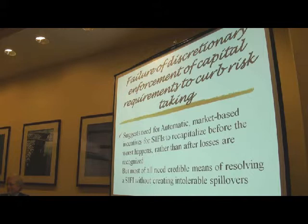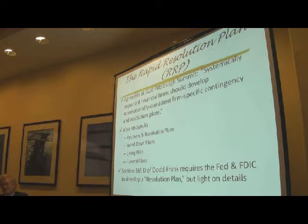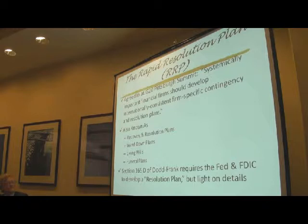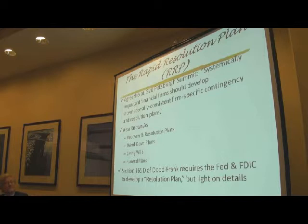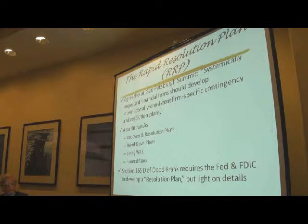The failure of discretionary enforcement of capital requirements suggests a need for automatic market-based incentives. But most of all, we need credible means of resolving SIFIs — what the G20 commented on in Pittsburgh. These are known as living wills; the British prefer the term recovery and resolution plans. Section 165D of Dodd-Frank requires that the Fed and the FDIC develop a rapid resolution plan, but it's very light on details. Rapid resolution should protect taxpayers from the necessity of bailing out SIFIs and make clear to the market that no SIFI needs to be bailed out — that there is a credible means of resolving a SIFI without causing intolerable spillovers.